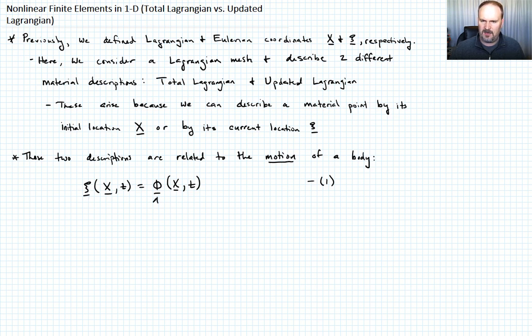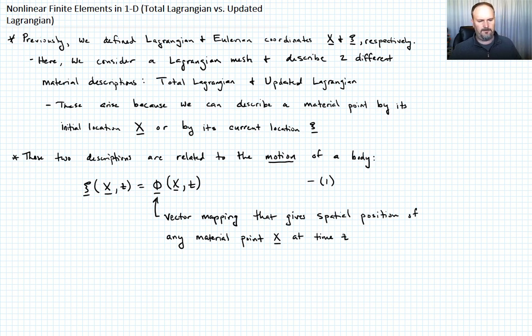So the location of this material point X at some time gives us this current location C. So what is phi? It's a vector mapping that gives a spatial position of any material point X at time t. We could also write the other, right? We could write, if we want to know, at a particular point, what is the material point that's located there.